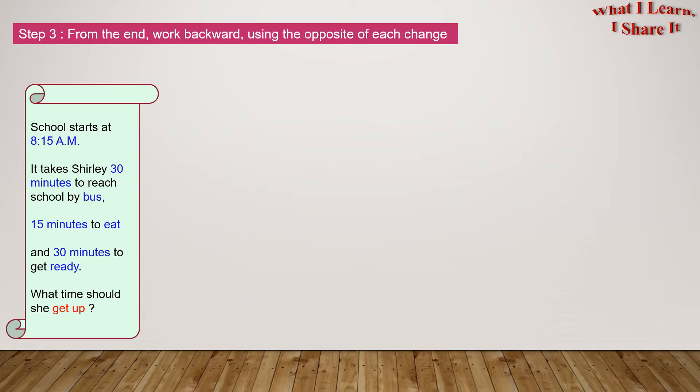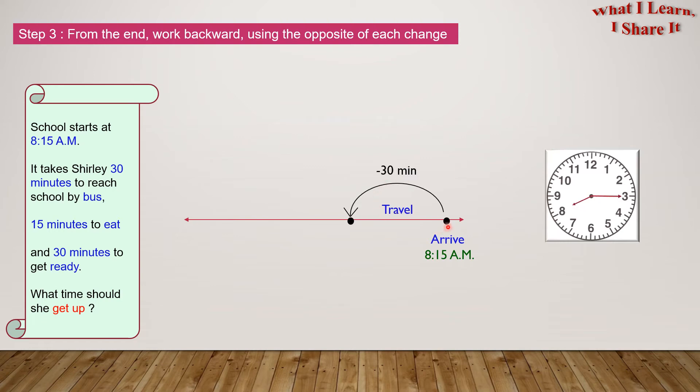Step 3: From the end, work backward, using the opposite of each change. So, she arrives at 8:15 AM. Here's 8:15. She travels for 30 minutes.